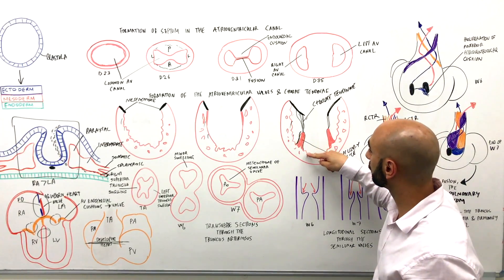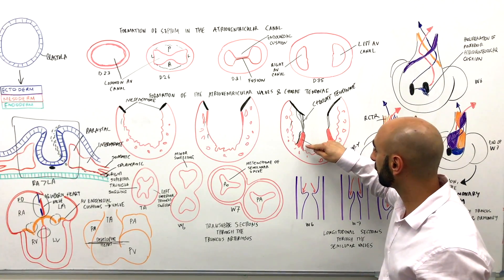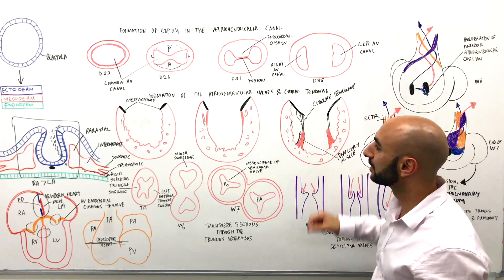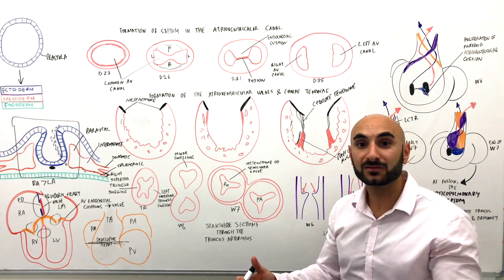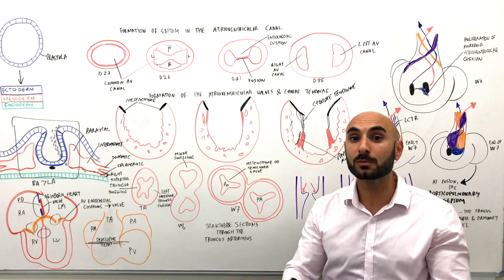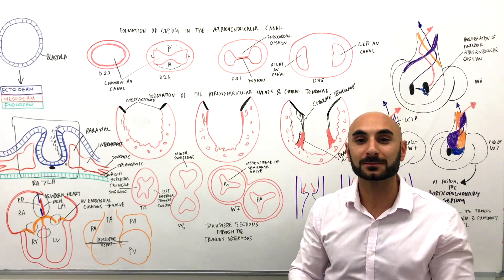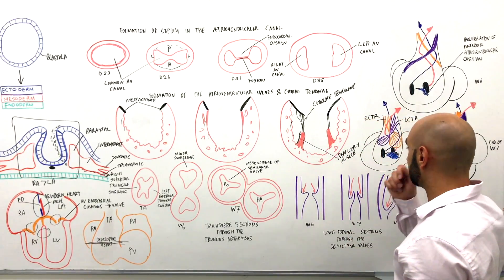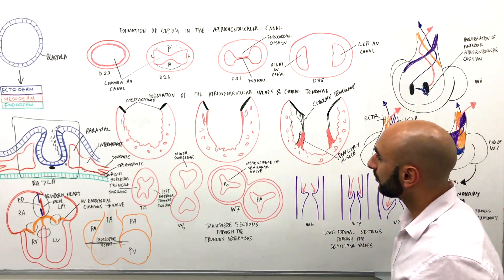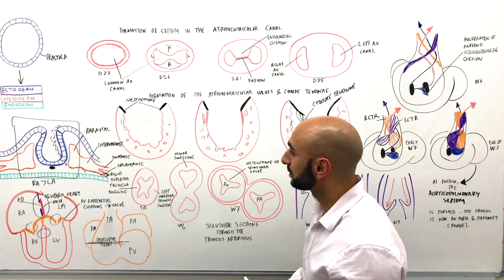The valve, the mesenchymal tissue, remains attached to the ventricular wall through this system of papillary muscle and chordae tendineae. Now there's also some molecular guidance to how this happens, but that's above the scope of this video. If you'd like to know more information about that, contact me on Facebook. I'll be glad to send you some info.